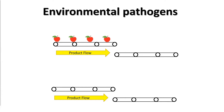In transient contamination, we have one product coming into our facility that's contaminated with a pathogenic microorganism. That contaminated piece of fruit is going to move through our facility and it might contaminate a few other pieces of produce that it directly contacts, but the level of overall contamination of products is relatively low.